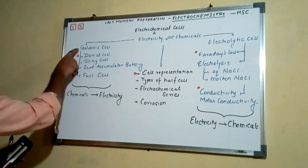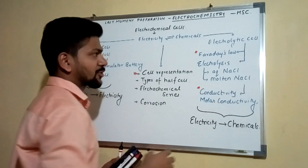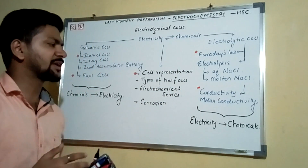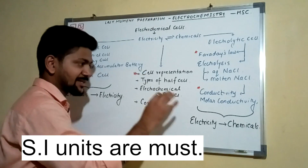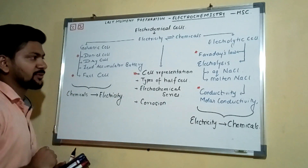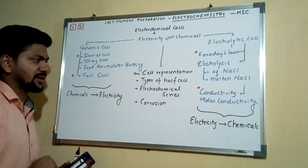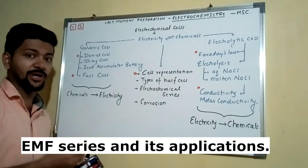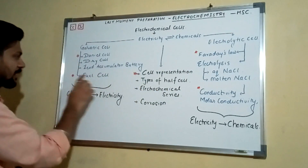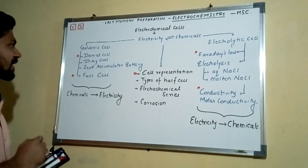Under galvanic cell, you can study the Daniel cell, dry cell, lead accumulator battery, and fuel cell. For electrolytic cells, cover Faraday's law, electrolysis of aqueous NaCl and molten NaCl, conductivity, and molar conductivity. Don't forget SI units and CGS units. Miscellaneous topics include cell representation, types of half-cell, oxidation and reduction half-cells, electrochemical series, and corrosion. The starred topics are very important — please do all of them well.